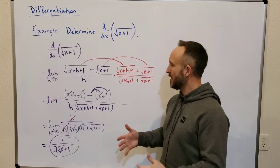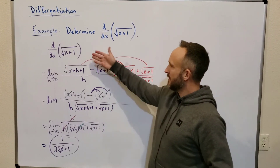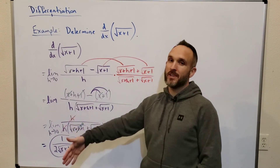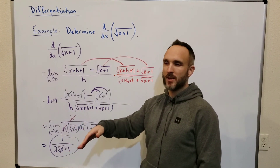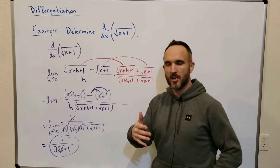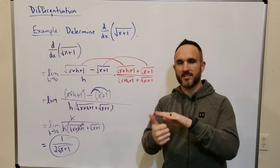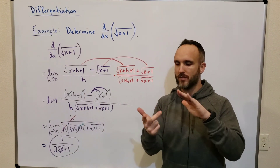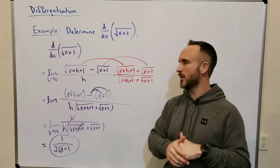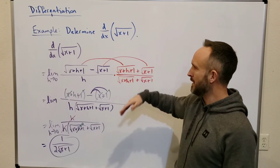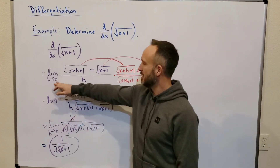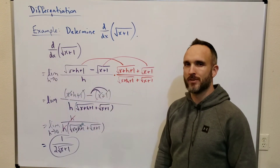You can imagine that once you get the derivative of a function, you could take the derivative again — so this process could continue to repeat to help you find the second derivative, the third derivative, the fourth derivative, as many as you want to go, because you can just keep repeating this process using the limit definition of a derivative.